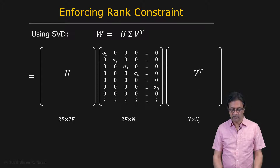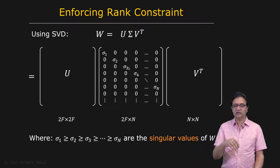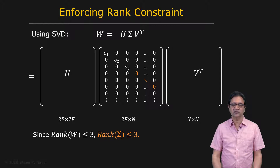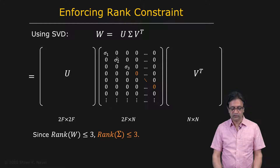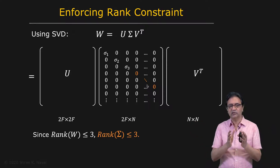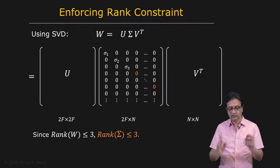V transpose is an N by N matrix, and sigma in the center is a 2F by N matrix containing all singular values along the diagonal in descending order of importance. The key observation is that we know the rank of W must be less than or equal to three. Therefore, W can have at most three non-zero singular values — all other sigma values in the matrix are going to be zero. These are massive matrices, but with very low rank.